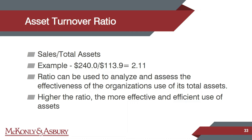Asset turnover ratio: sales divided by total assets. Lending institutions want to know how well you're using your assets relative to sales. In our example: $240 sales divided by $113.9 total assets equals 2.11 times. The higher the ratio, the better — it means your assets are working for you to generate sales. This ratio analyzes and assesses the effectiveness of an organization's use of its total assets, which is something third parties and lending institutions want to see.